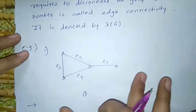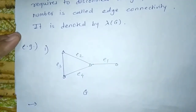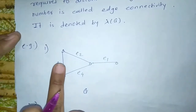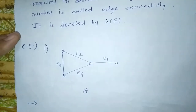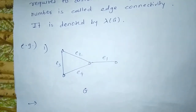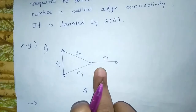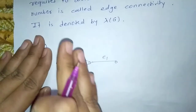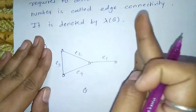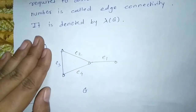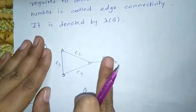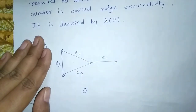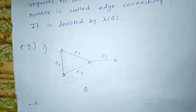For example, consider this graph. We have 4 vertices and 4 edges. Now you can see that if we delete this edge we get a disconnected graph. From this side and from this side there is no edge when we delete this edge. So, edge connectivity is 1.